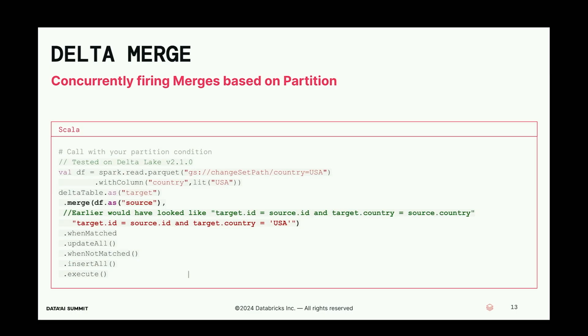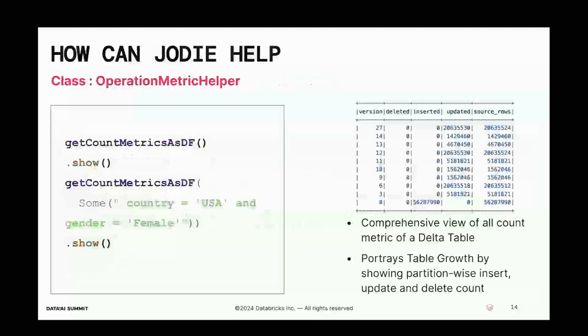The code change is very simple. In your merge condition, instead of writing `target.country = source.country`, you can write `target.country = 'USA'`. So you can have multiple merge jobs — one for USA, one for Canada, one for India — all running concurrently, giving you the speed you need. Jodie can help you here as well. We have a method called `get_count_metric_sdf`.